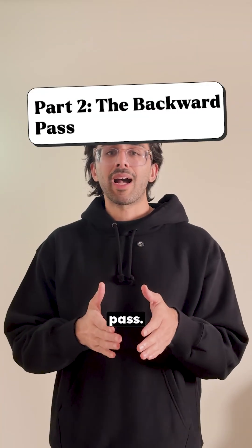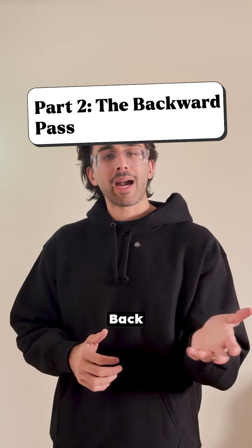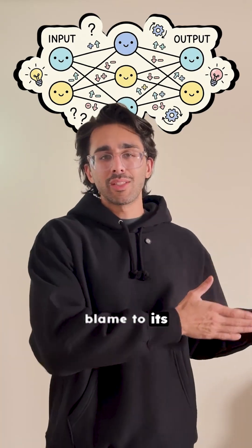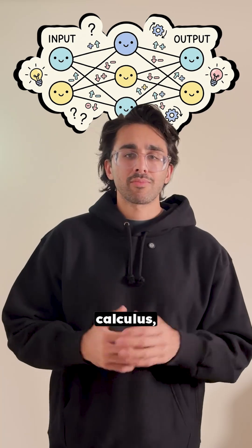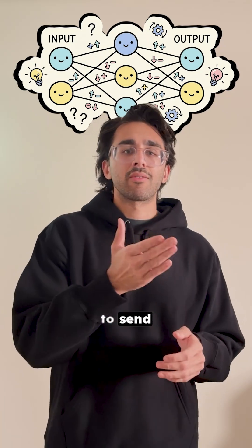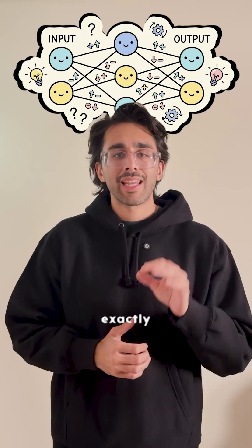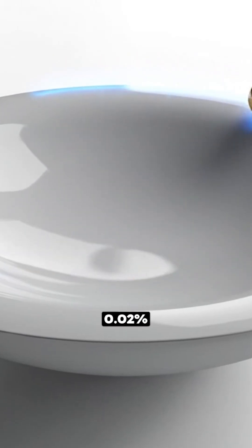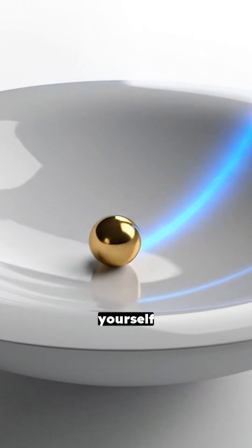Now for part two, the backward pass. This is the magic algorithm. It's called backpropagation. Backpropagation is like a corporate manager distributing blame to its employees. It uses calculus, the chain rule to be specific, to send the error backwards, telling every single weight exactly how much it screwed up. You, weight number 1,342, you're 0.02% responsible. Nudge yourself down.